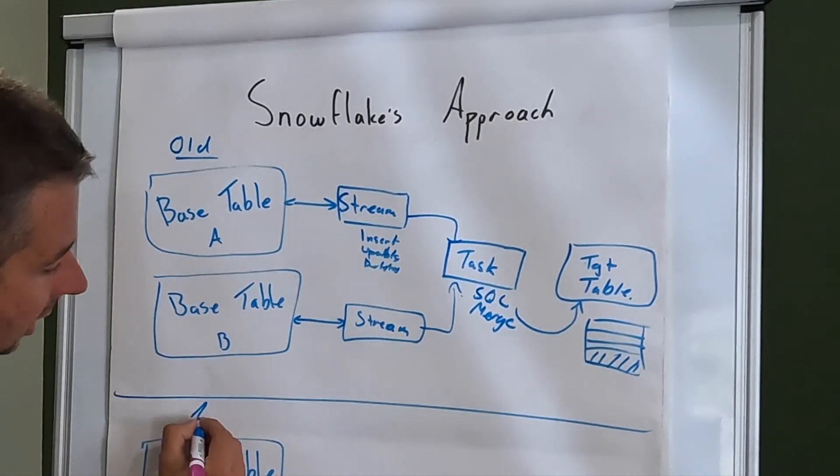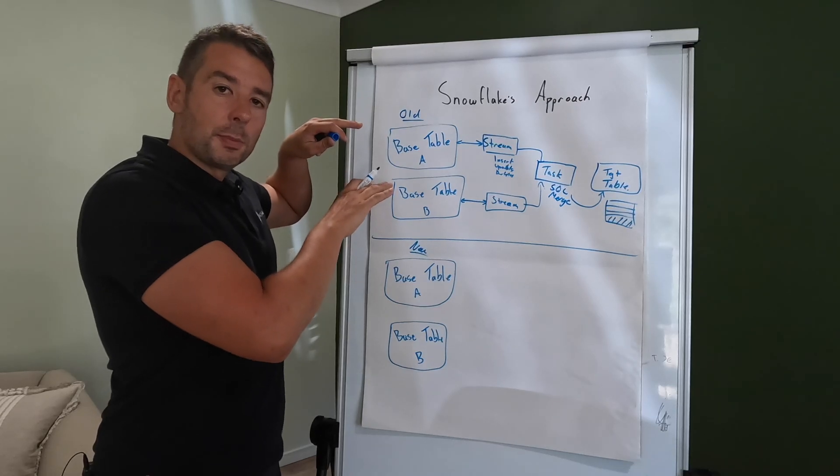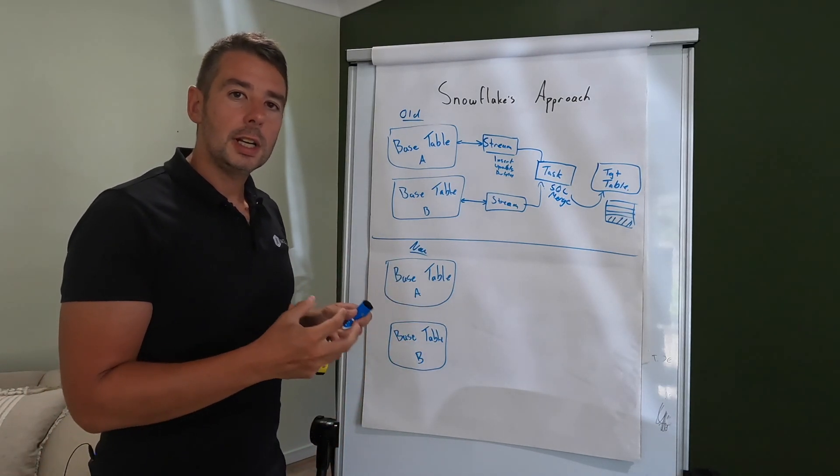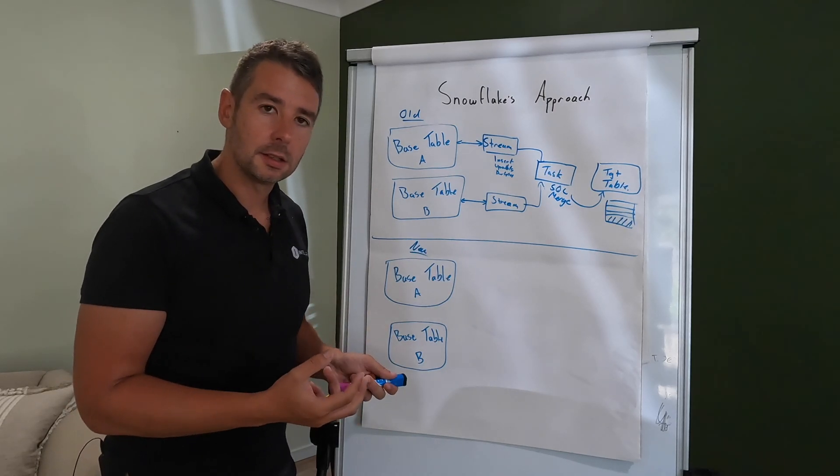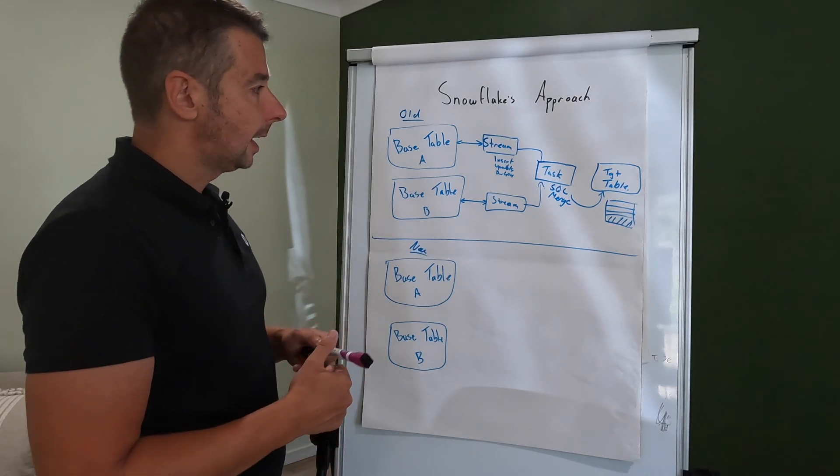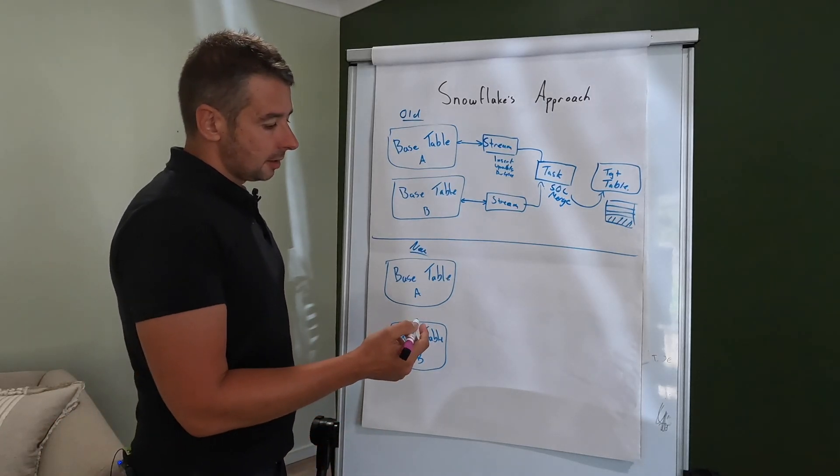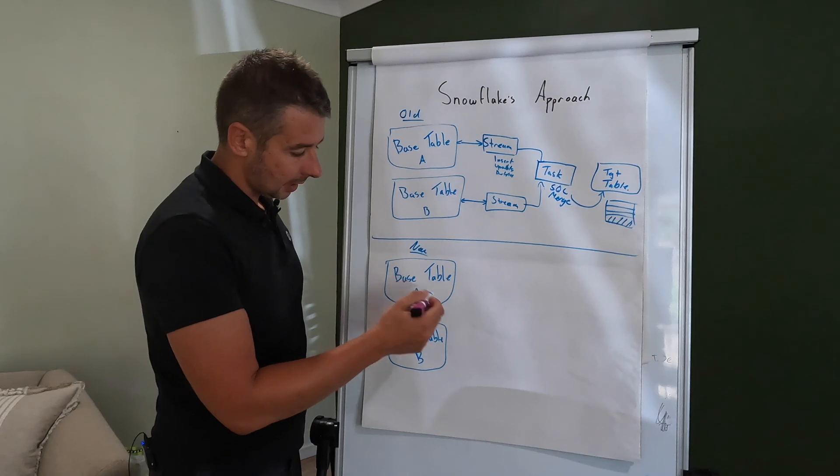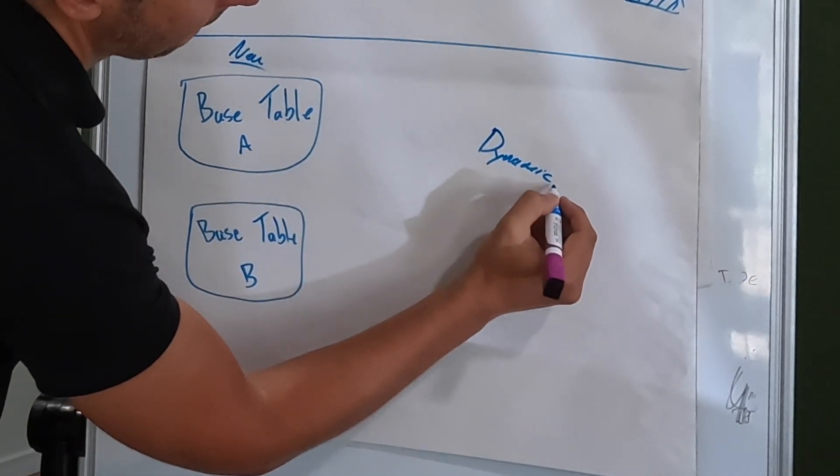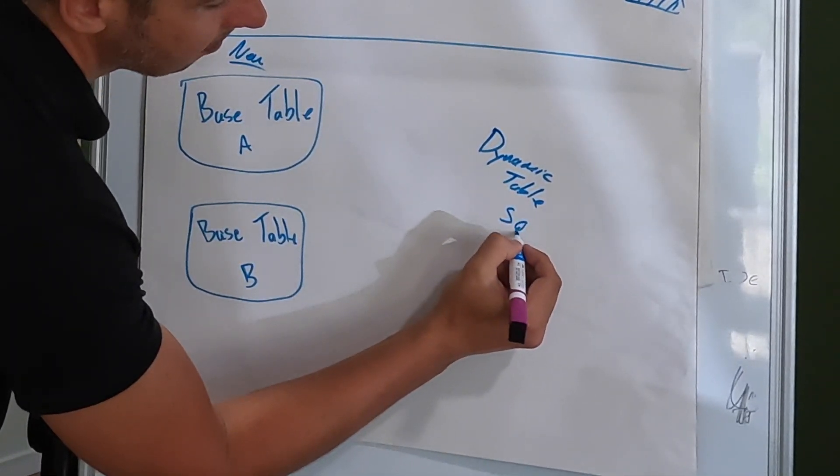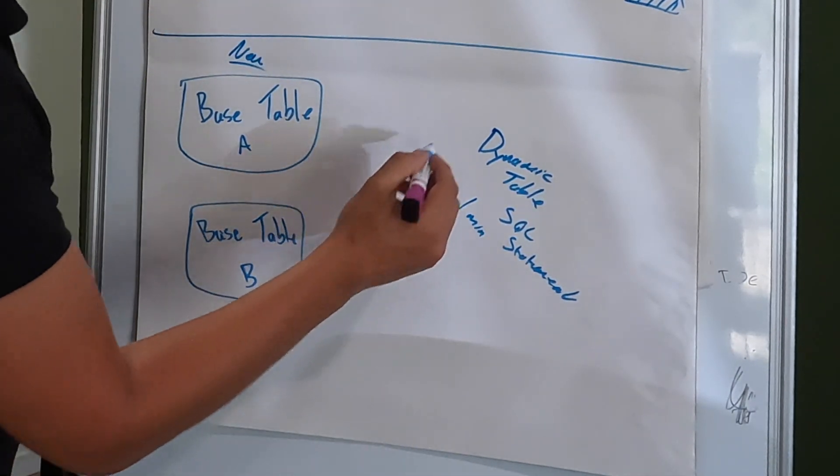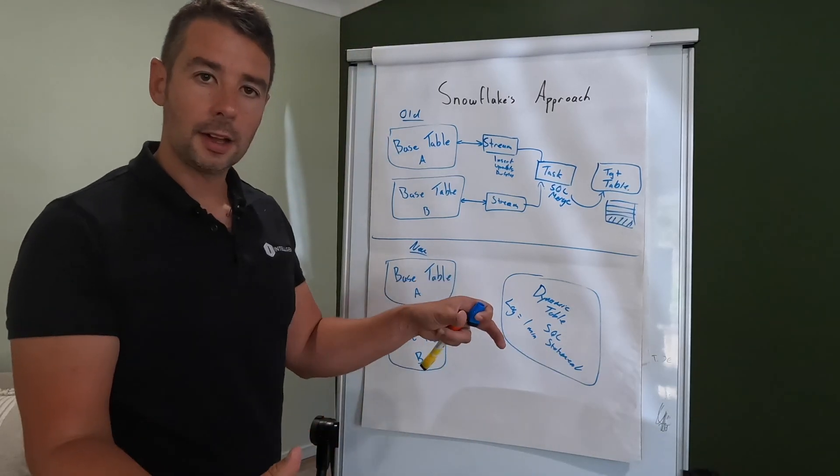So that was the original way of doing it. There's now a new way and it doesn't mean that this approach is now not valid. The new approach using what are called dynamic tables is really being designed for near real-time, low latency use cases in many respects but it can be used for data refreshes on a longer frequency because it does remove a lot of this complexity as we'll see in a second.